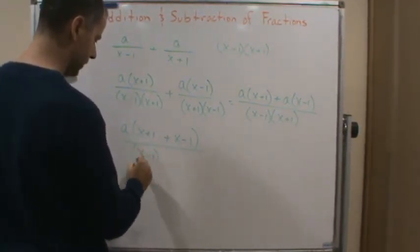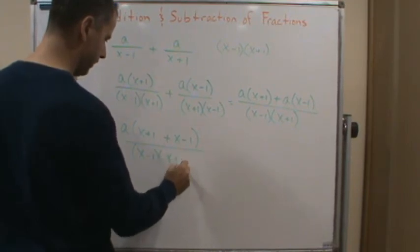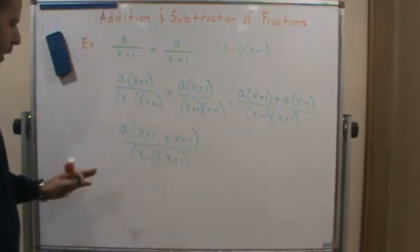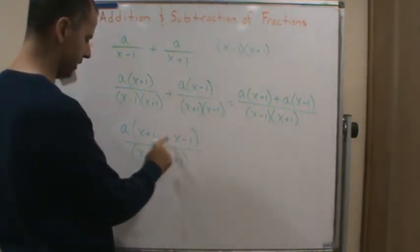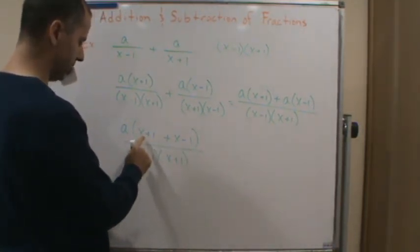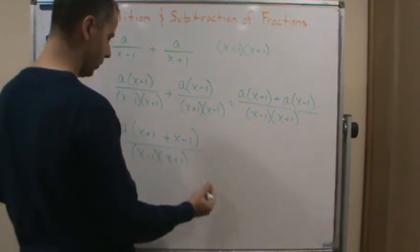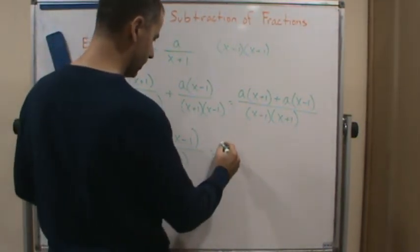And we can just drop the parentheses because it's addition, and we just get this over x minus 1 times x plus 1. Now if I simplify the top, well this cancels with this, so plus 1 minus 1 equals 0, and I get x plus x which is 2x.